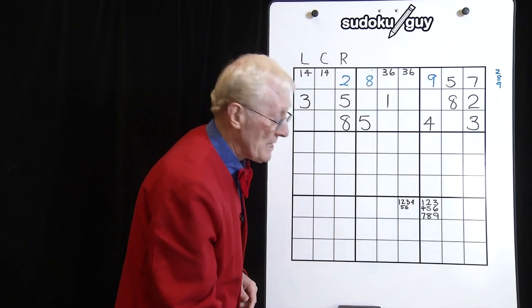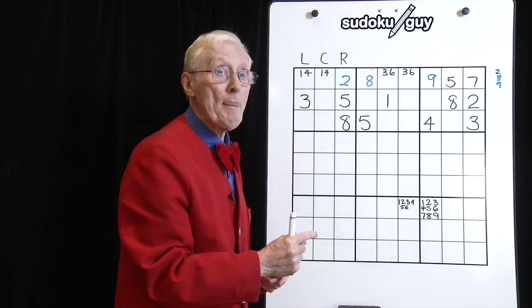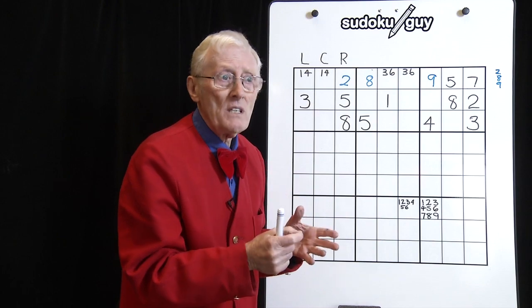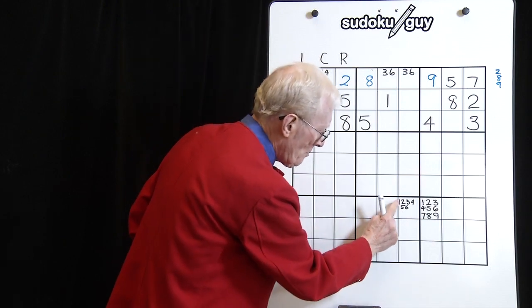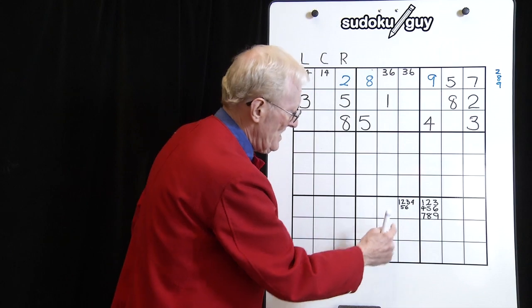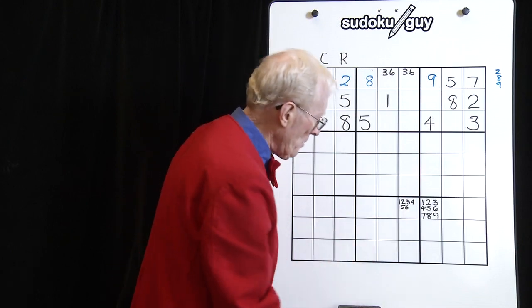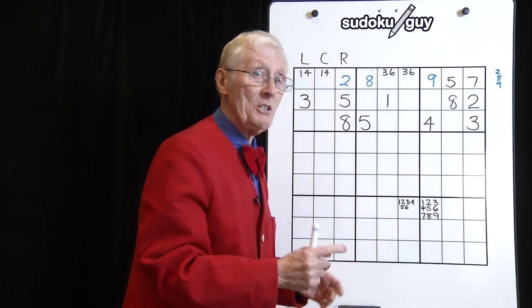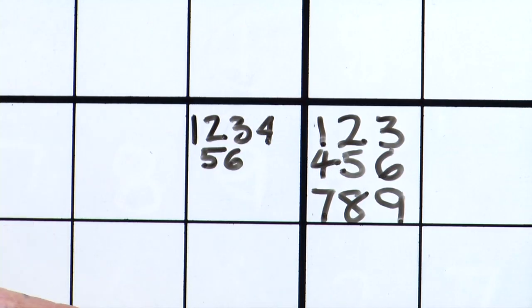I want to show you something. How do you put little candidate numbers into cells? There are different ways of doing it — they both have their pros and cons. One way is to put them all squashed up together and then put a number underneath. The other way is to have them laid out one through nine in a grid pattern. You'll see me using both — you can use whichever way you wish.